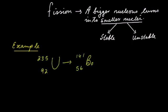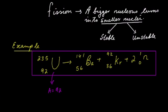Take an example of uranium-235, which turns into barium plus krypton plus two electrons. Note that the mass number always stays the same.